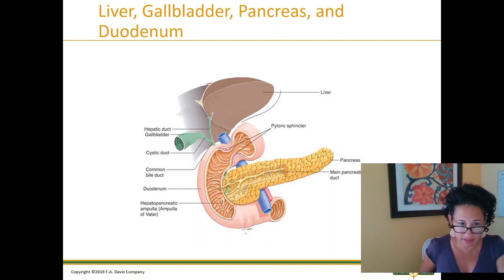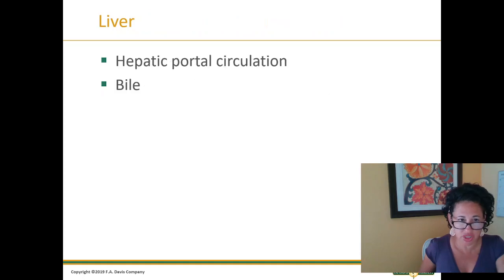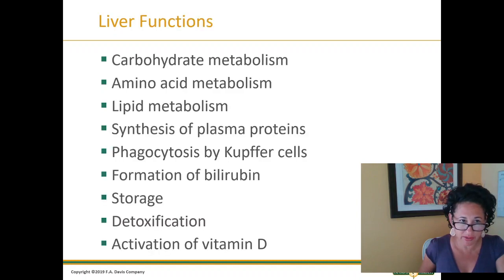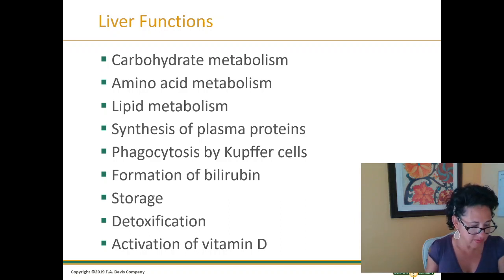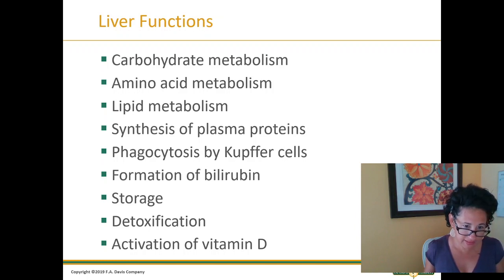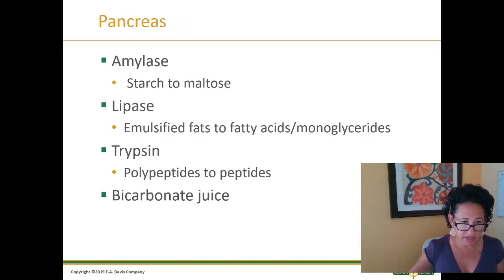A lot of people have cholecystectomy — and how does that affect your fat intake after that? Accessory organs produce and store digestive secretions. The liver is responsible for hepatic portal circulation and bile — its functions include carbohydrate metabolism, lipid metabolism, synthesis of plasma proteins. We know it for storage and detoxification, and activation of vitamin D. Detoxification is a big thing — when the liver's not properly functioning, that's what's involved. Gallbladder stores bile, so when they remove it you no longer have the ability to process those fats. The pancreas: we're talking about amylase, lipase, trypsin, and bicarbonate juice.